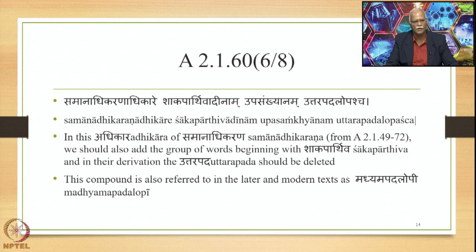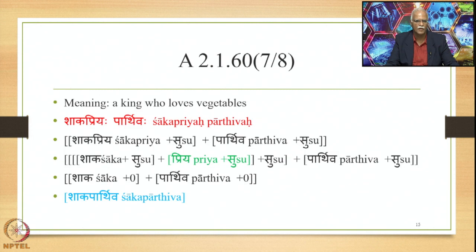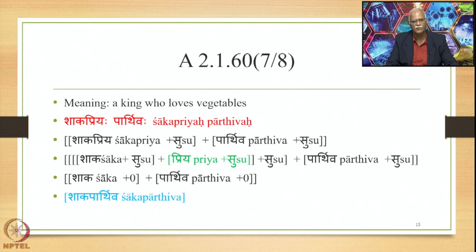Because we see Shaka Priya Parthivaha and Priya gets deleted, they say this is a Madhyama Padalopi. But if we observe very closely, the meaning is 'a king who loves vegetables' — Shaka Priya Parthivaha. Now Shaka Priya is already a compound in which Priya is the Uttarapada, so this is not a compound of Shaka, Priya, and Parthivaha. This is a compound of two Padas — Shaka Priya and Parthiva — where Shaka Priya is one of those two Padas with Priya as its Uttarapada. So what is deleted is the Uttarapada of one compound, and that is why the tradition describes it as Shaka Parthivaha with Uttarapada Lopa.